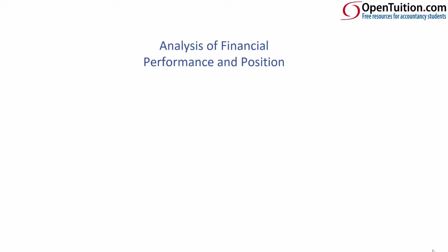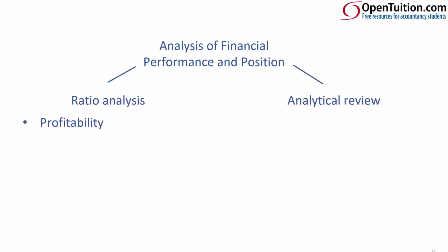Analysis of financial performance and position is essentially made up of two aspects: the ratio analysis and the analytical review. The ratio analysis is very literal — it's just calculating and crunching the numbers. There could be half a dozen questions or so, purely calculating numbers. When you calculate the numbers, you might have to calculate ratios based on profitability — things you've seen before such as gross margins, operating margins and net margins — but also introducing new areas such as return on capital employed and asset turnovers.